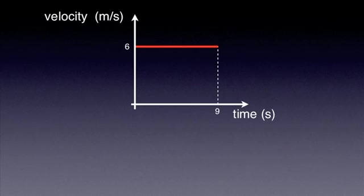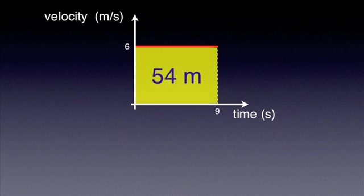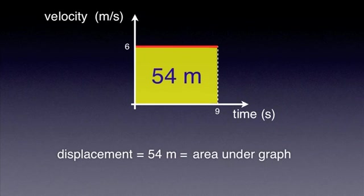What about the area under the graph? Let's consider a body moving at a constant velocity of six meters per second for nine seconds. The velocity-time graph is shown below. Calculating the displacement in this case is straightforward. Covering six meters in a second for nine seconds gives us a total displacement of 54 meters. Let's now calculate the area under the graph. It is a rectangle and its surface area is 9 times 6 equals 54. This suggests that the area under the graph represents the displacement, which can be calculated as velocity times time interval.